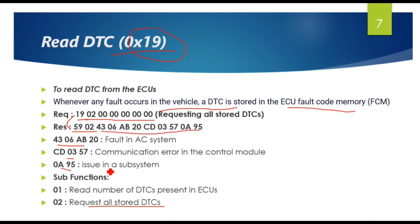The third one is communication error in the control module, and the last one is an issue in the subsystem. If I break down the first DTC: 43 is the DTC category, such as powertrain fault, and 06 AB 20 is the specific DTC, such as air conditioning pressure sensor fault. Similarly, CD 03 indicates a different fault, 57 indicates a fault index, and 0A 95 represents a subsystem fault, such as a fault in the throttle actuator.